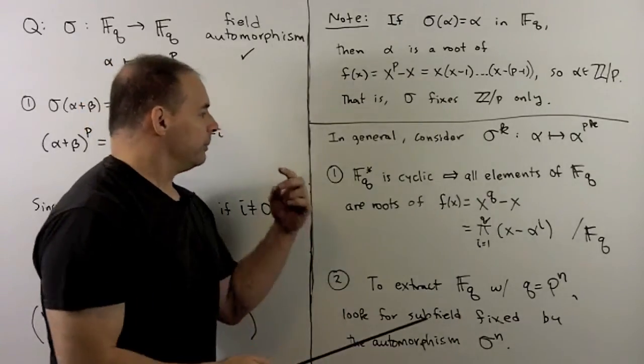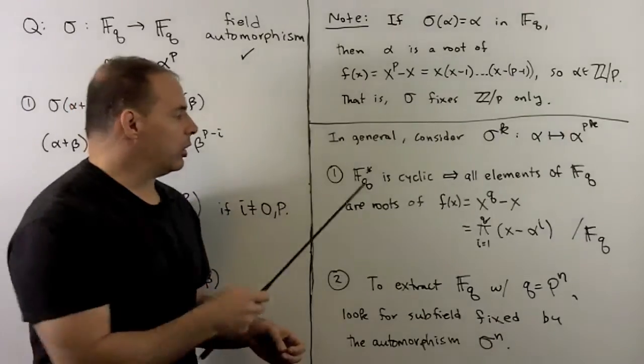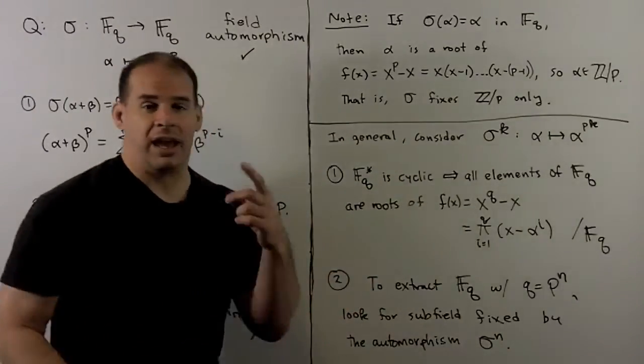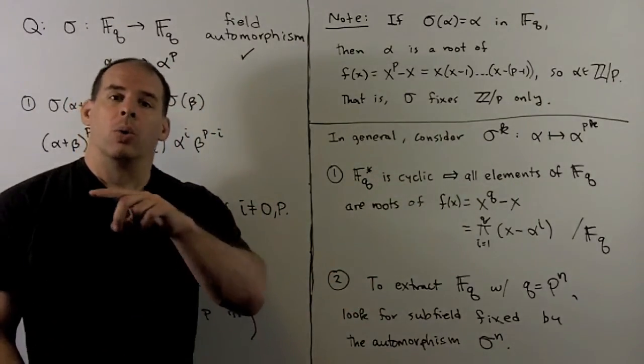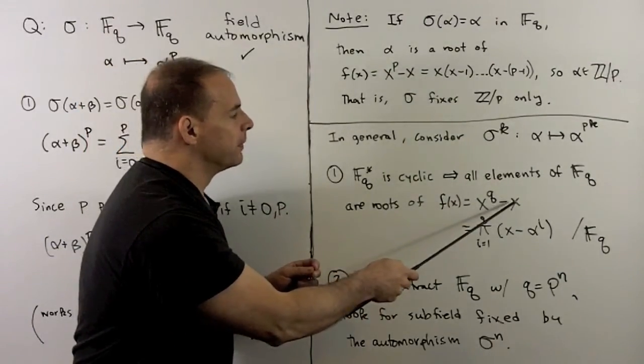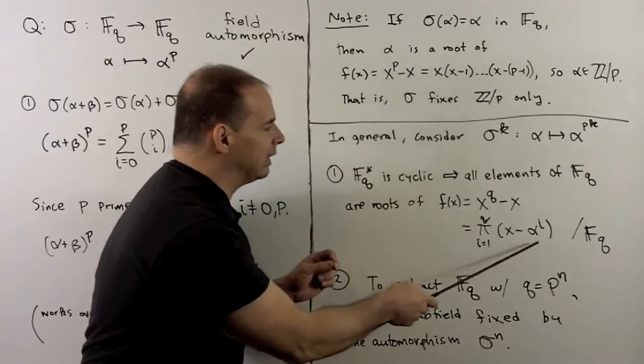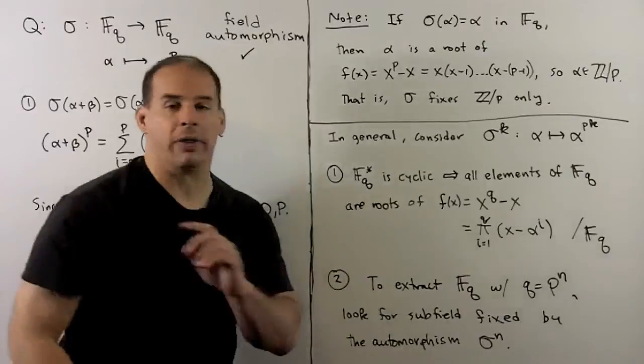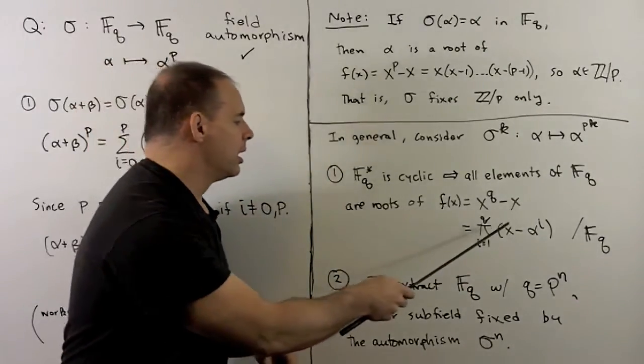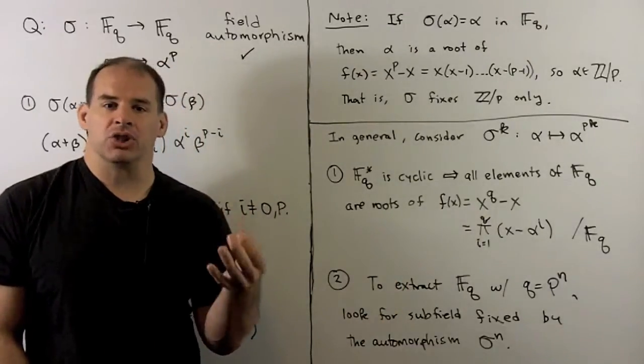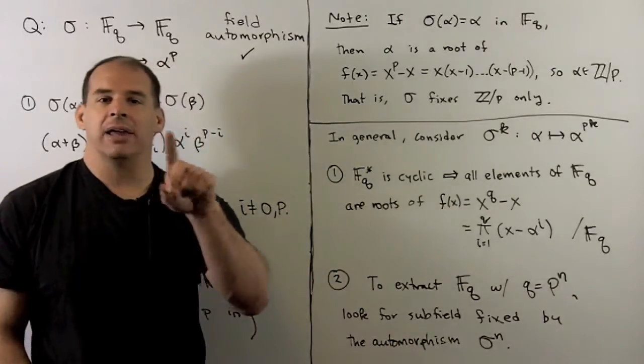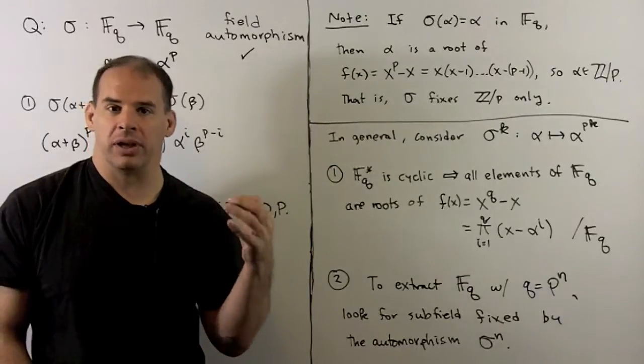So rather than raising to the pth power, we raise to the p to the kth power. Now, if we're in F_q, we know that F_q star, the group of units is cyclic. That's going to have p to the n minus 1 elements. So we're going to have every element in F_q as a root of x to the q minus x. And then that means we can factor this polynomial completely over F_q. So it's just going to range over all the elements of F_q, each being used once. Now, if we were in a general field, I wanted to extract a finite field with q elements. Well, what I could try to do is apply sigma to the n and see if there's a fixed field that comes out of that.